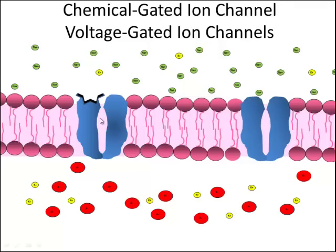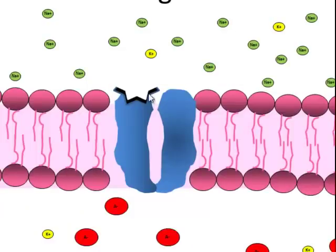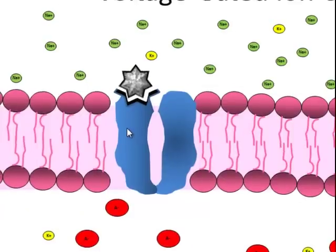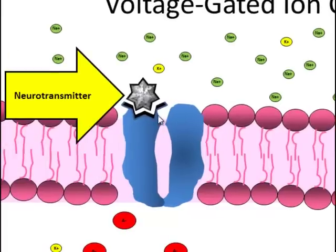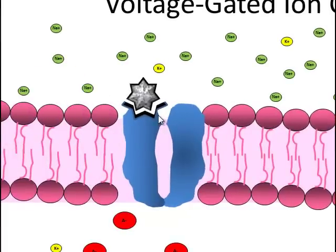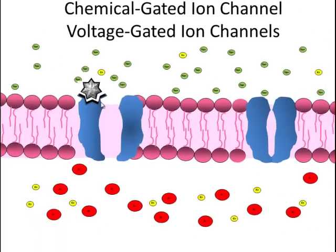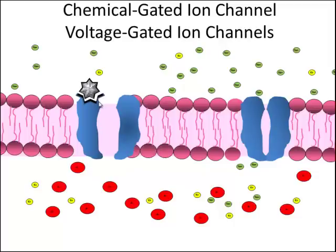The first one is a chemical-gated ion channel, which has a receptor site for a chemical. A chemical, such as a neurotransmitter, can come in and fit in the receptor. This will cause the receptor to open up. It's kind of like a key into a lock.